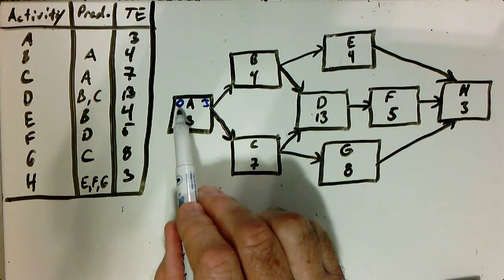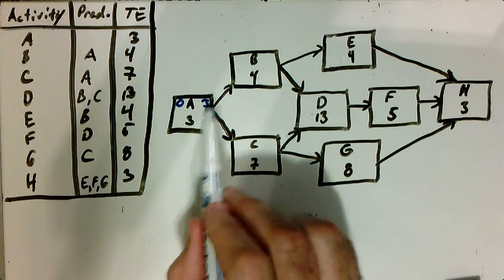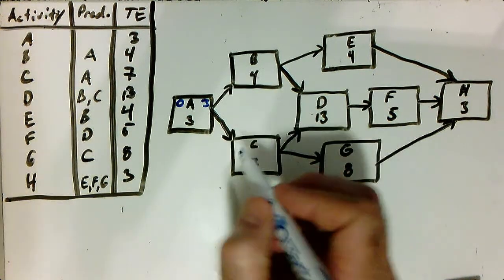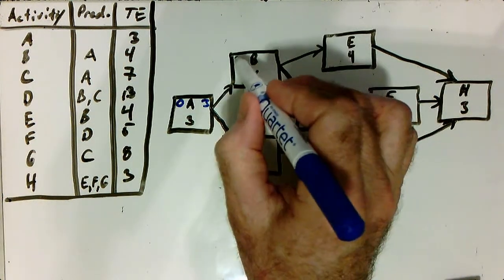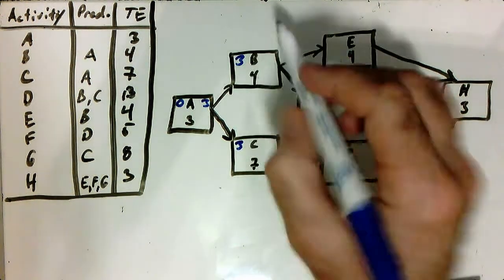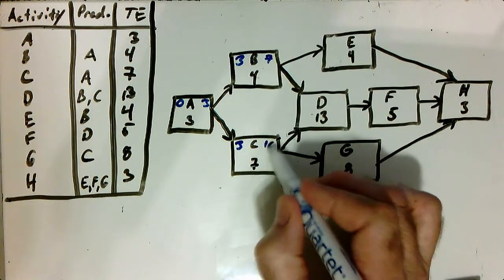Now this was our early start. This was our early finish. Now our early finish number in the upper right-hand corner then becomes our early start for everything that's connected to. So in a burst activity, it gets and moves on to B and C. That's the number that proliferates. And we add again. So three plus four, seven. Three plus seven, ten.